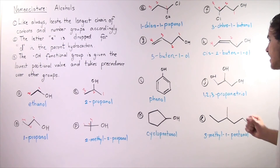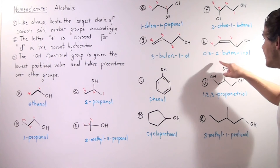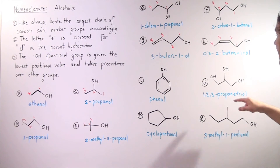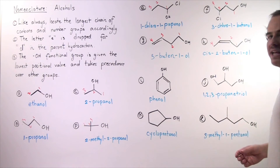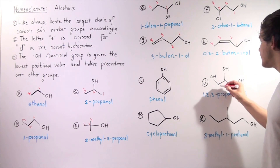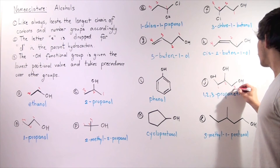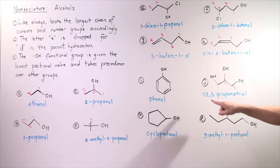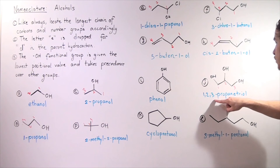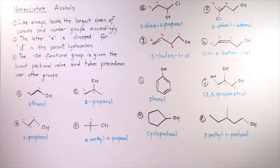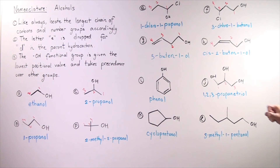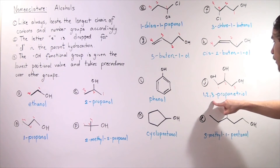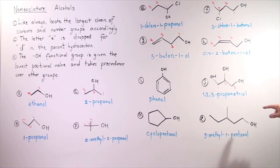Example J: we have three different hydroxy groups and a three-carbon chain. Because this is symmetrical, it does not matter where we begin. So let's begin on this end: one, two, three. We name this 1,2,3-propanetriol. We have a propane backbone with hydroxy groups on the first, second, and third carbons — triol — and that's how you name it.